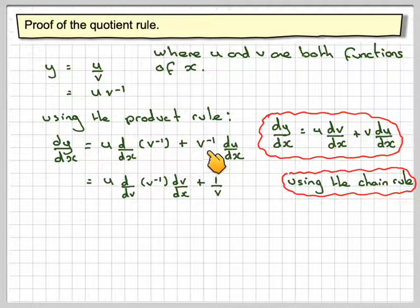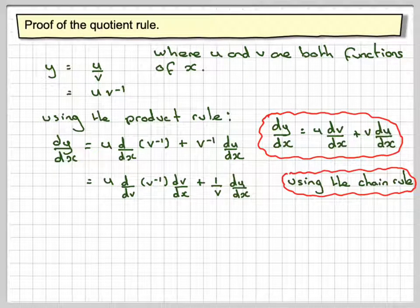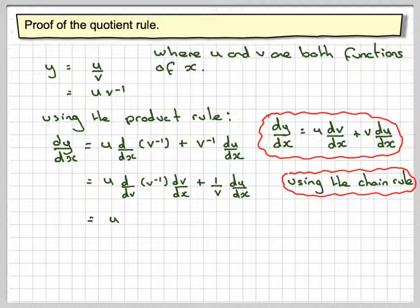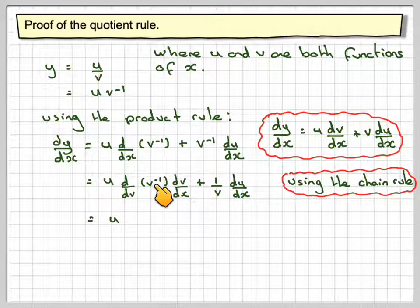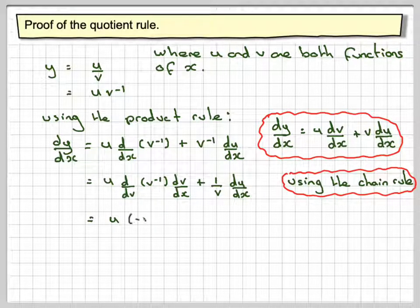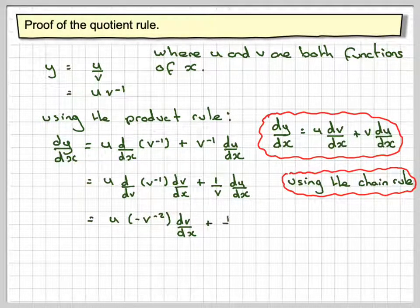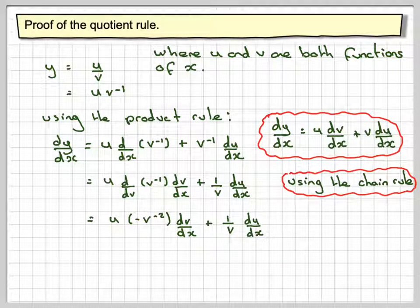Plus 1 over v, that's what v to the minus 1 is, times du by dx. So it's going to give me u. Now the derivative of this with respect to v is going to be minus v to the minus 2, dv by dx, plus 1 over v du by dx.